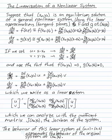Well then the system we wrote above can be rewritten du dt as partial f partial x at x naught, y naught, u plus partial f partial y at x naught, y naught, v. Similarly for dv dt, partial g partial x at x naught, y naught, u plus partial g partial y at x naught, y naught, v.